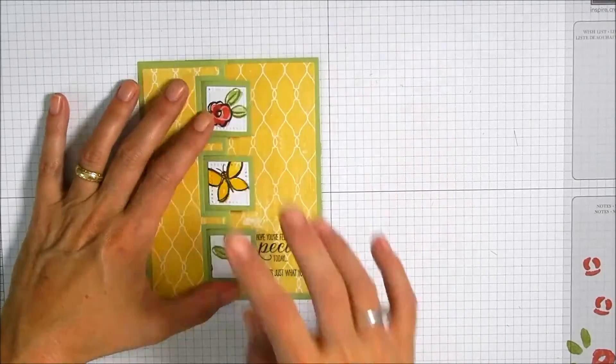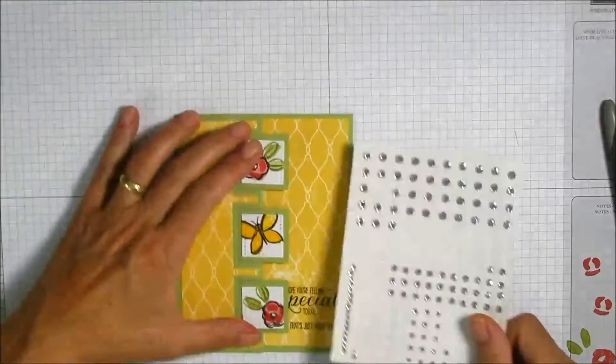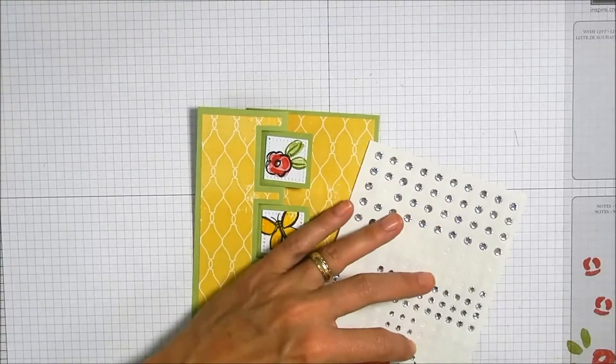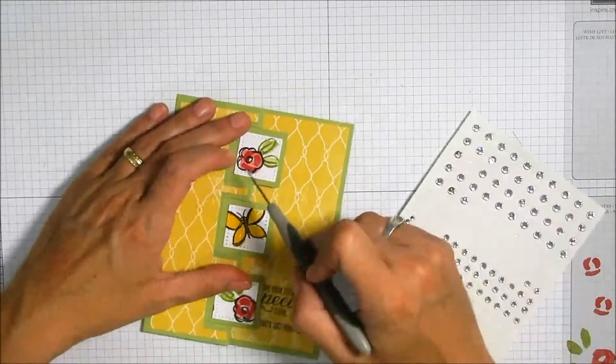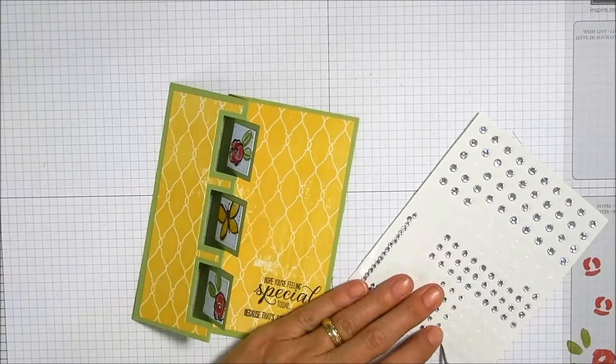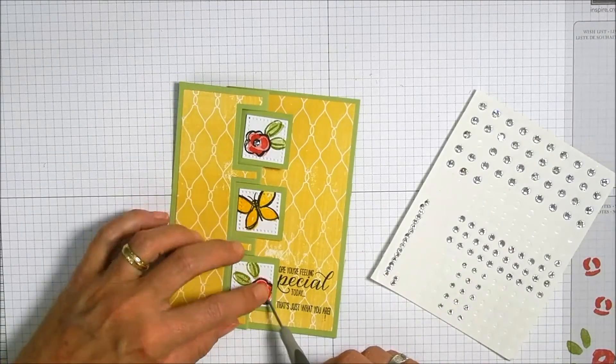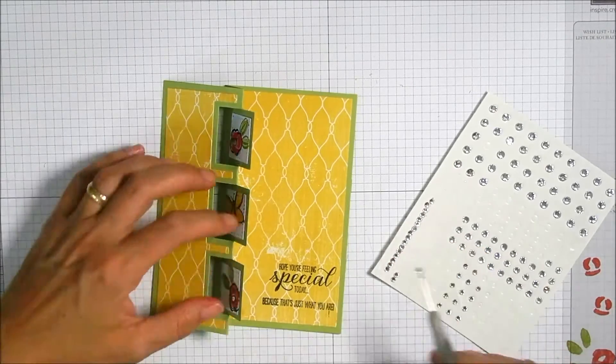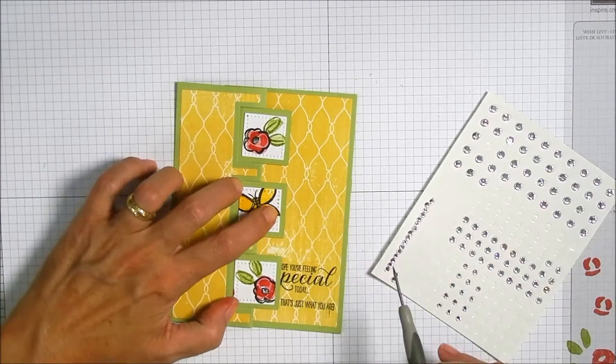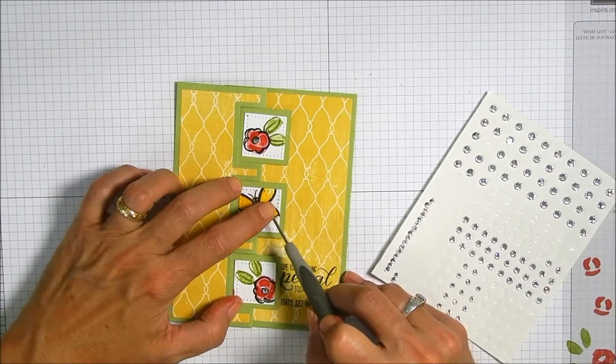That kind of finishes the design for the card but I decided it needed a little bling so I'm gonna add some of the teeny tiny basic rhinestones from Stampin' Up to the center of those little flowers. Then went to the butterfly but I didn't like it right there so we're gonna move it up to the top.